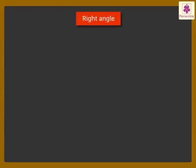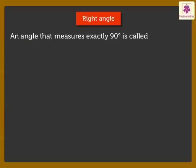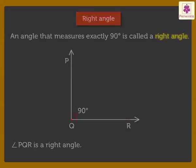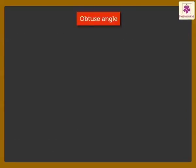Next is Right Angle. An angle that measures exactly 90 degrees is called a right angle. Look at the figure. Here, angle PQR measures 90 degrees. So, angle PQR is a right angle.